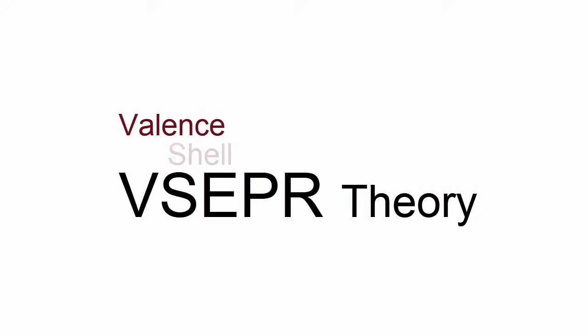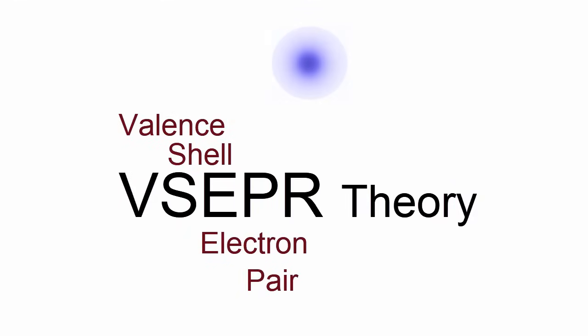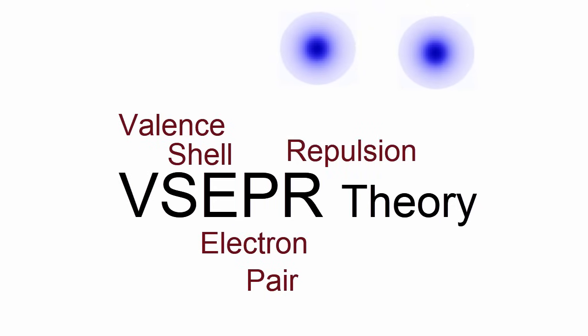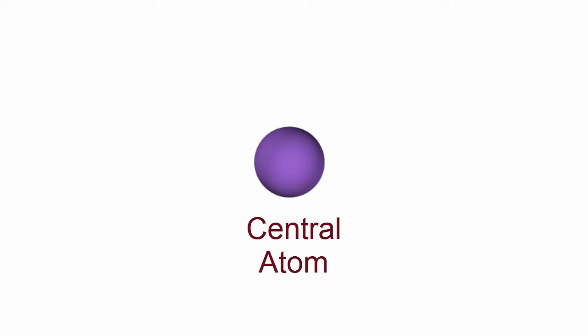We'll look at the valence shell electrons — these are the electrons on the outside of the atom, and they come in general in pairs. Since electrons are negative and they're on the outside of the atom, each atom has a cloud around it, and that cloud will repel other atoms when they come close together. For molecules, we also have that repulsion between atoms. Here we have a central atom in purple, and we're going to add other atoms to it to make a molecule.